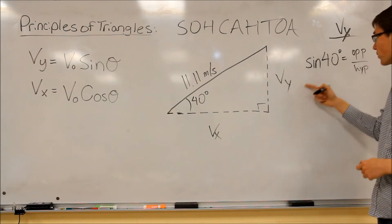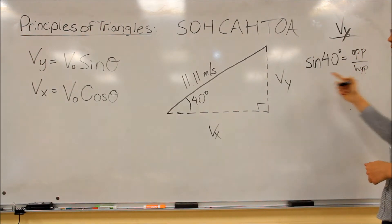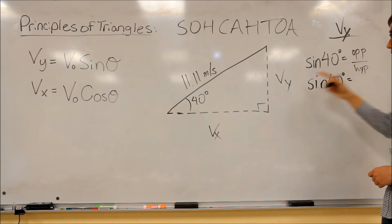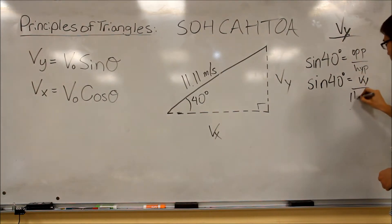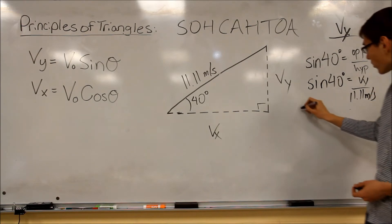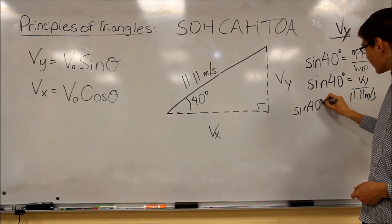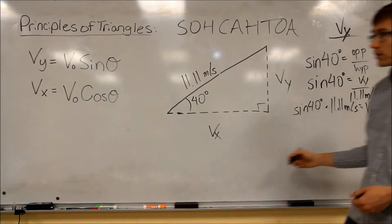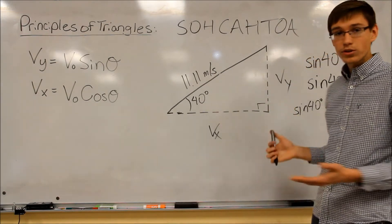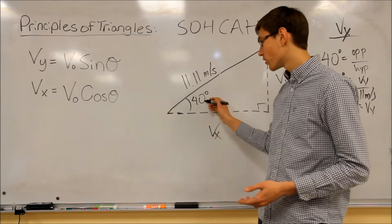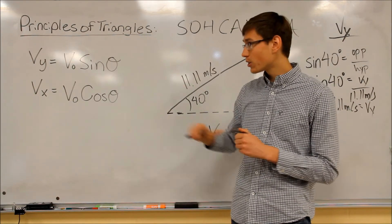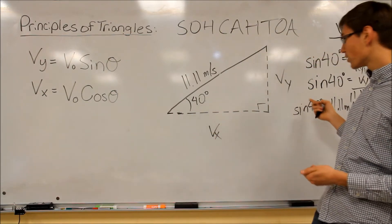As an example, we can find vy by using sine 40. Sine is opposite over hypotenuse, so we write: sine 40 equals opposite, which is vy, over hypotenuse, which is 11.11 meters per second. Using algebra, we multiply sine 40 times 11.11 meters per second, and that equals our vy, where 11.11 is our initial velocity. We also have the ability to plug in any angle — not just 40 degrees — into this equation. It's an all-purpose equation, and we use it similarly for vx, instead using cosine.